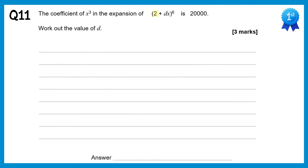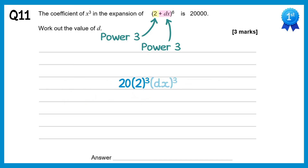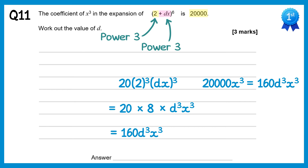In this question a equals 2 and b equals dx, and we need the coefficient of x cubed. We take dx to the power 3 and 2 to the power 3 as well, since 3 plus 3 makes 6. The sixth row of Pascal's triangle gives coefficient 20. So we have 20 times 2 cubed times dx all cubed. 2 cubed is 8, and dx cubed is d³x³, so we get 160d³x³. We're told the coefficient is 20,000, so 20,000 = 160d³, giving d³ = 125 and d equals 5.